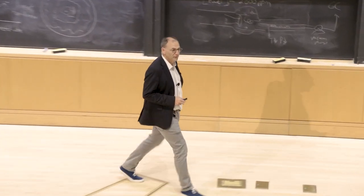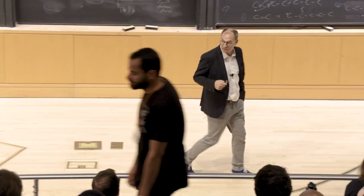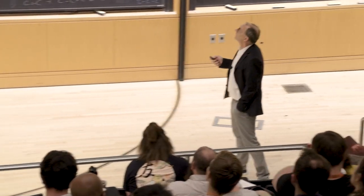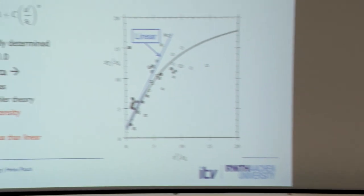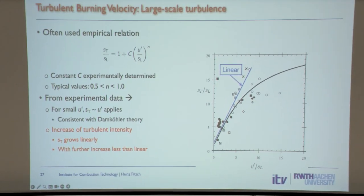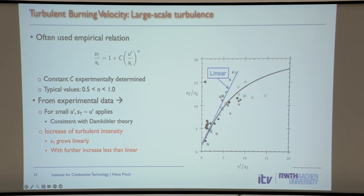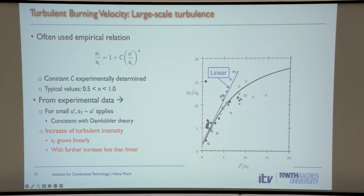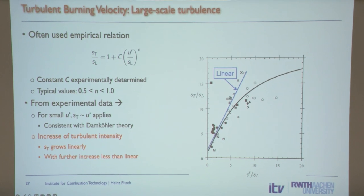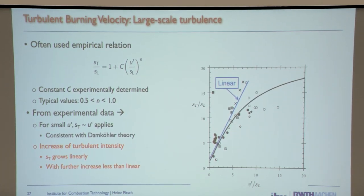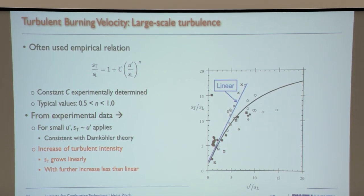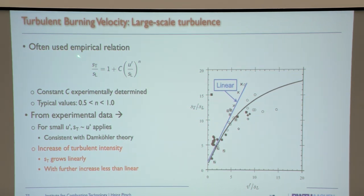We should have finished this before the break. We discussed the model for the turbulent burning velocity in the corrugated flame-rich regime, where the flame is very thin compared with the smallest turbulent eddies. This is a model that's often used. In that regime, s_T is proportional to u'.